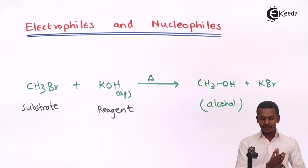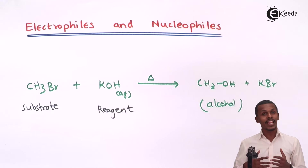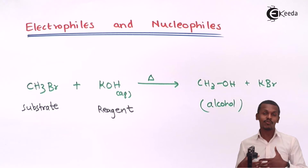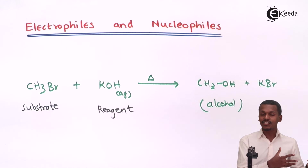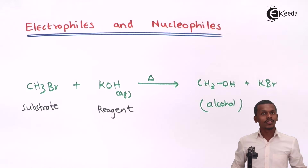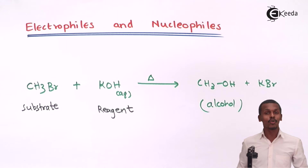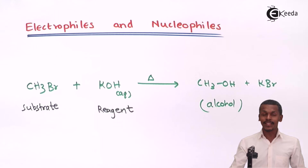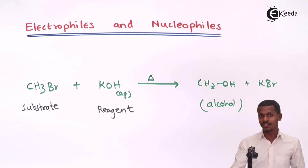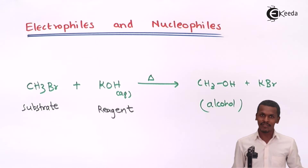We need to convert the substrate into a desired product with the help of a reagent — a species that can change the substrate into the desired one. That is why KOH or potassium hydroxide is called the reagent. This reagent can be of two types: a nucleophilic reagent and an electrophilic reagent, commonly known as nucleophiles and electrophiles respectively.